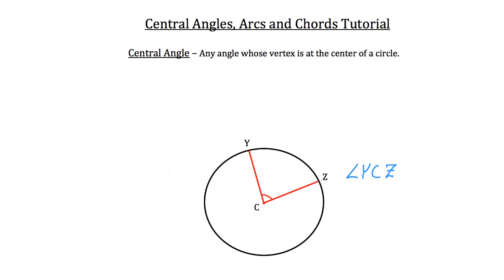Now something that you may have noticed about this central angle is that it divides the circle into two pieces. You can see the smaller piece between Y and Z that I've highlighted in green, and you can see this larger piece, again between Y and Z, but going around the outside or the exterior of that central angle.